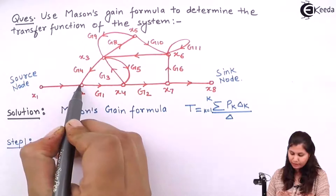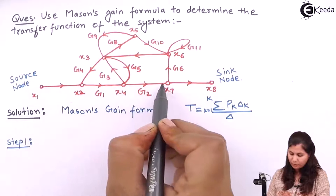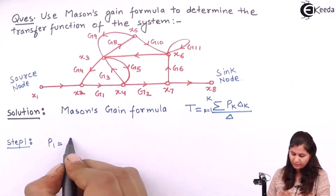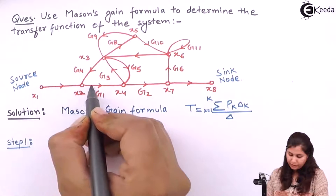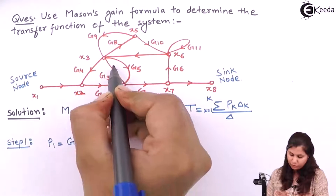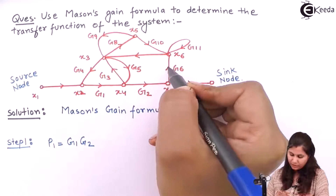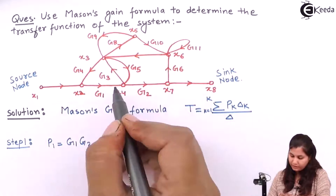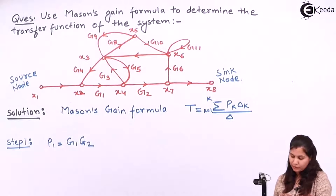Now let us find out the forward paths in this system. Starting from the source node, we go through g1, then g2 — so we have the first forward path as g1·g2. Is there any other forward path? Starting from here, g1, then g3, but from g3 we can go to g8, g10, and from g10 there is no path going to the sink node. So there is no other forward path — we have only one forward path: g1·g2.